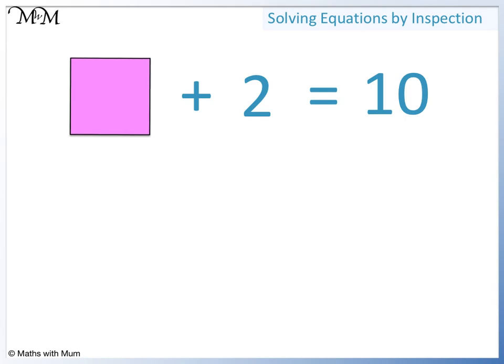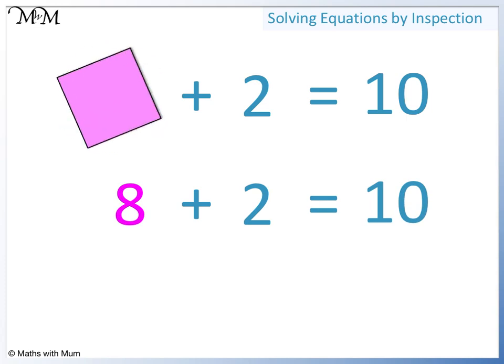We want to find the value of the square. We think that the value of the square plus 2 equals 10. We know that 8 plus 2 equals 10, and so the square has the same value as 8. Square equals 8.